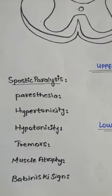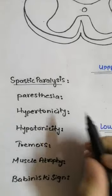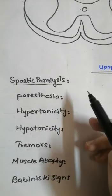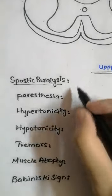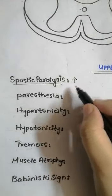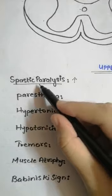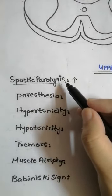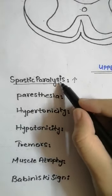Starting with the important terms, beginning with spastic paralysis. What is spastic paralysis? It is mostly called as hypertonicity — hypertonicity of a muscle. Because the muscle has a specific tone, if the tone of a muscle increases, this is hypertonicity, and because of the hypertonicity there is spastic paralysis. Due to the overhypertonicity, there is no function of the muscle, and that is where the paralysis occurs.